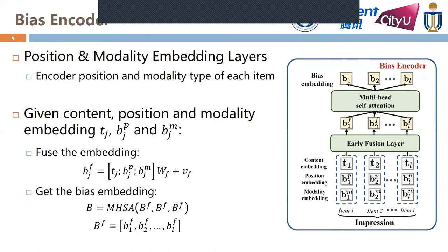For the bias encoder part, given the impression, the bias encoder aims to capture the biases from a context perspective. Therefore, we first embed different positions and modalities into different embeddings. Then, given each item, we fuse its content embedding, position embedding, and modality embedding. We then obtain the debiased embedding by meta-head self-attention to capture the item interactions effectively.